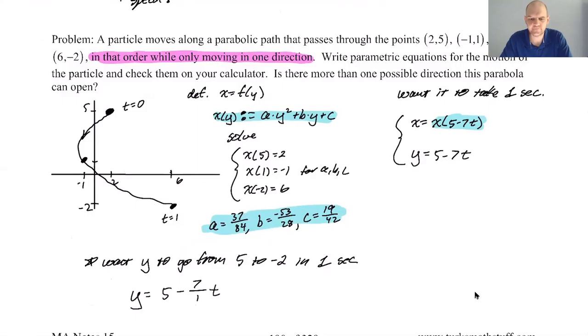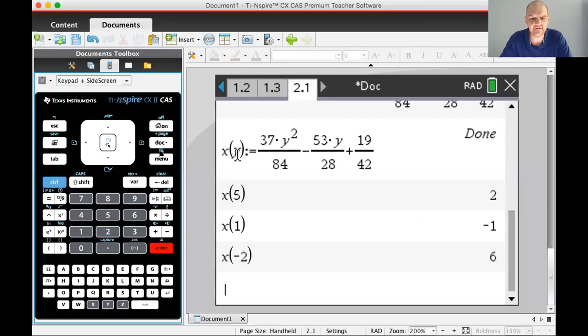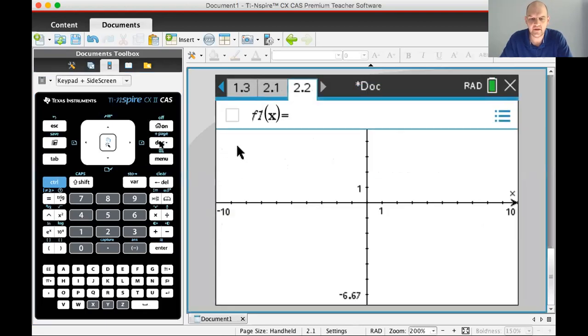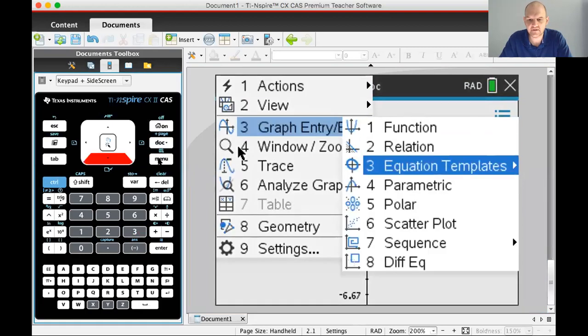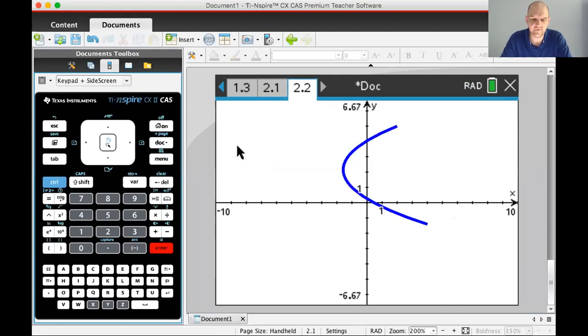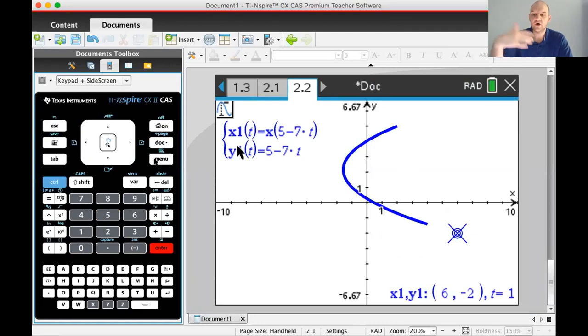Let's graph it and see if it worked. So calculator. So we already have x of y stored, and that's a big deal. So I'm going to add a graph page, doc for option four, I'm going to change to parametric. So option four, and then I need to do x of 5 minus 7t, and make this 5 minus 7t. I need t to just go from 0 to 1, press enter. Okay, let's trace. Let's see if this worked. Menu, 5, enter. When t is 0, I'm at 2, 5, which I should have been. When t is 1, I'm at 6, negative 2, which is where I should have been.